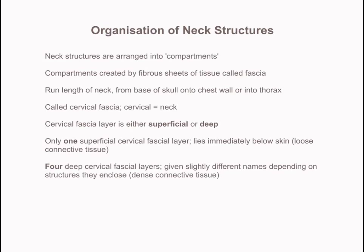The superficial cervical fascia, of which there's only one, lies immediately below the skin. It consists of very loose connective tissue with fat, superficial lymph nodes and superficial blood vessels like the external jugular vein, and also some cutaneous nerves supplying the skin of the neck. We also find the platysma muscle within this superficial cervical layer. That muscle arises from the lower part of the face, the inferior border of the mandible, and descends down the neck, blending onto the clavicle, sternum and anterior chest wall.